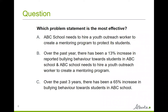The correct answer is C: Over the past three years, there has been a 65% increase in bullying behavior towards students in ABC school. Let's look at why this answer is the best answer.